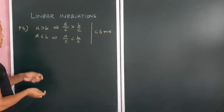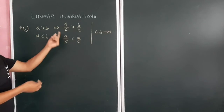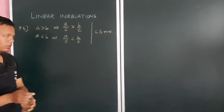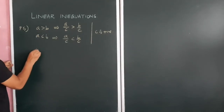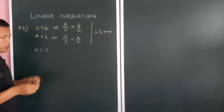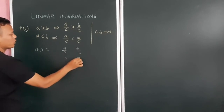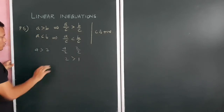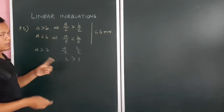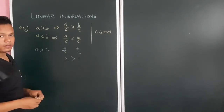Property 5: if you divide both sides by a positive number, the sign remains the same. For example, 4 > 2 — divide both sides by 2 (a positive number): 4 ÷ 2 = 2 and 2 ÷ 2 = 1, and 2 > 1. The sign remains the same. So dividing both sides by a positive number does not change the inequality sign.